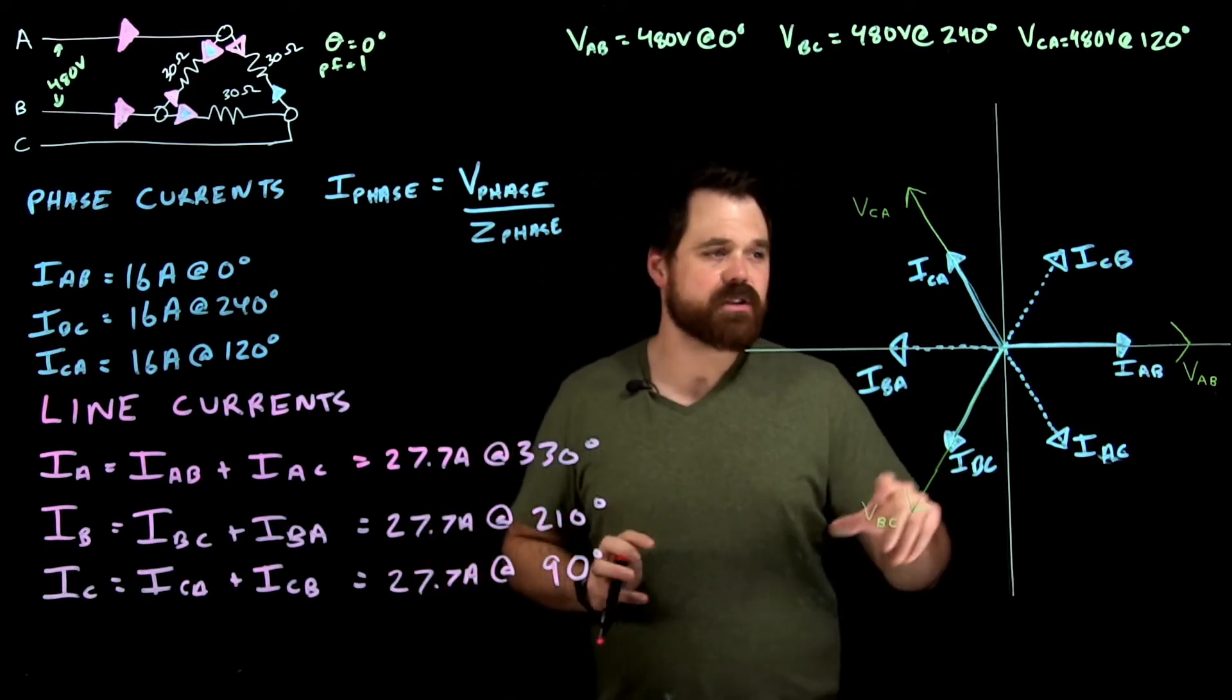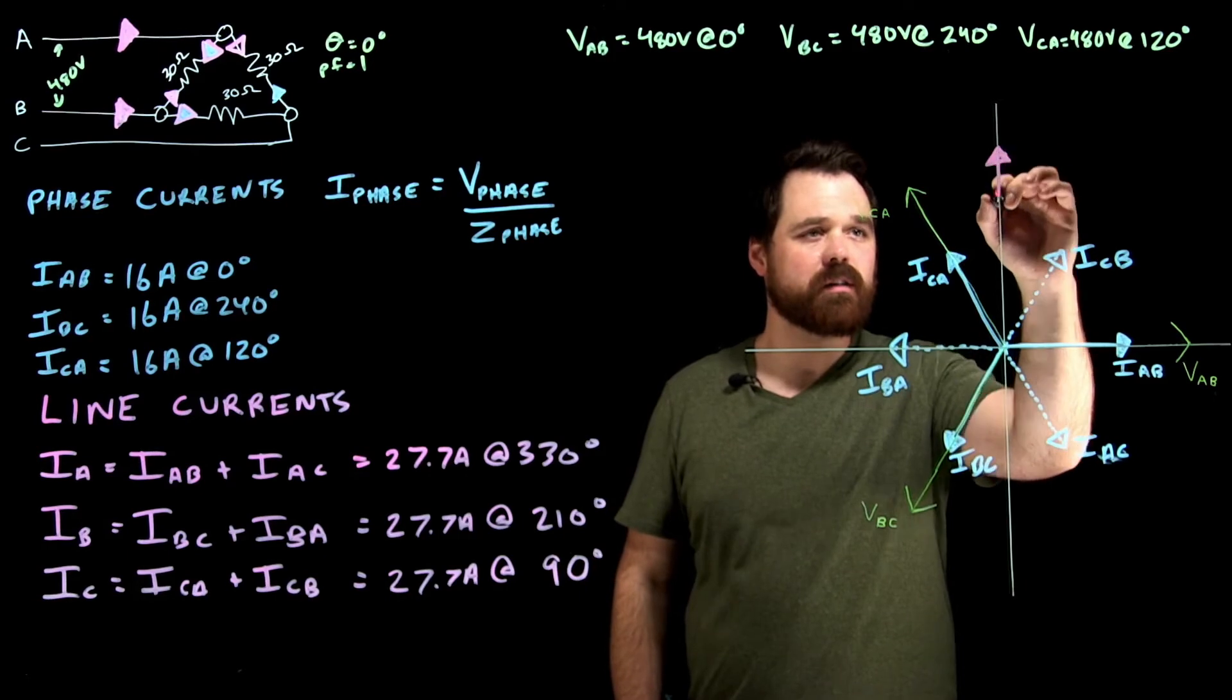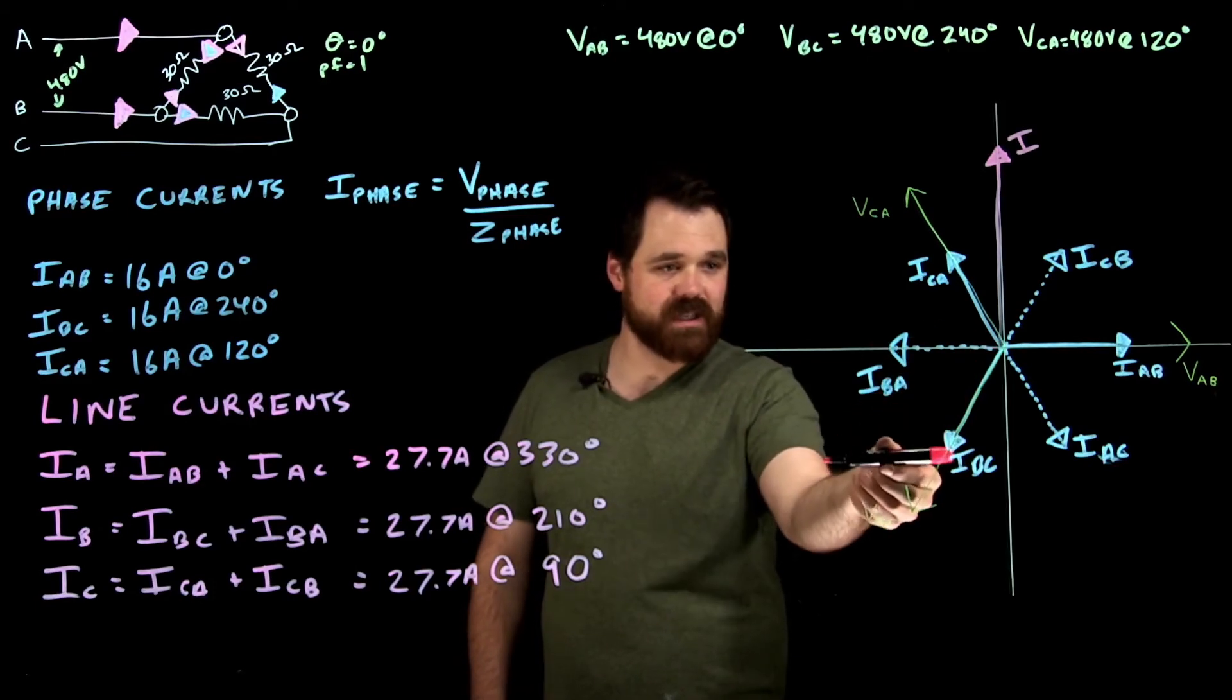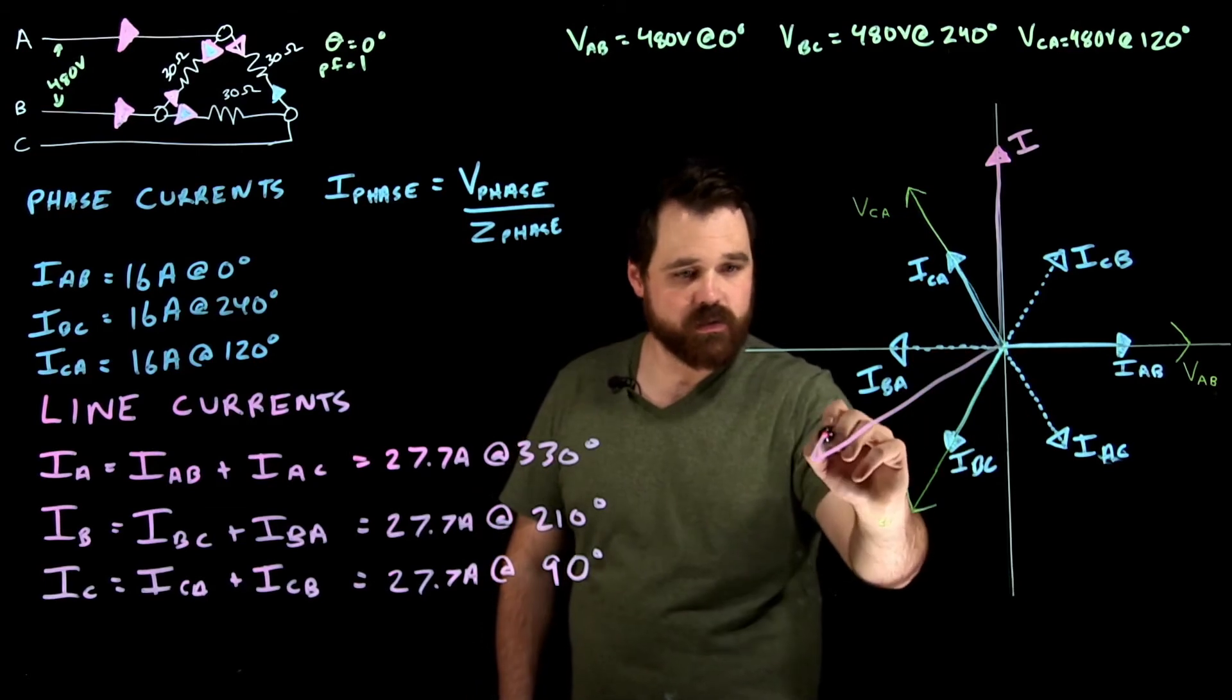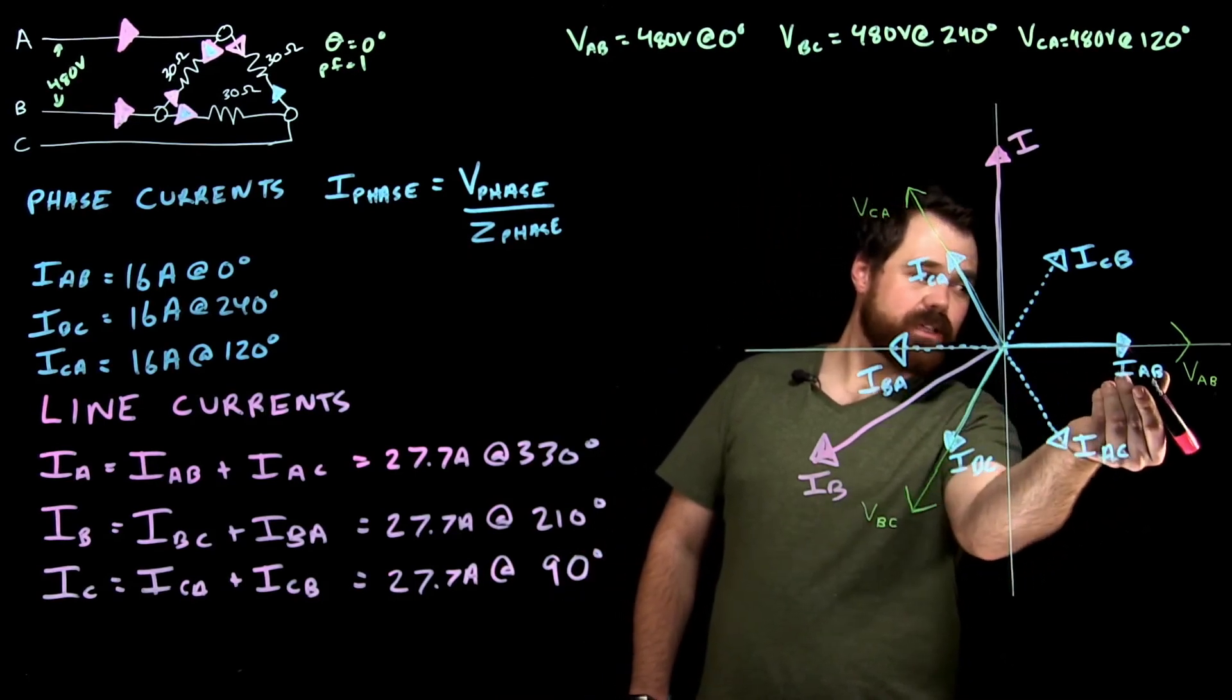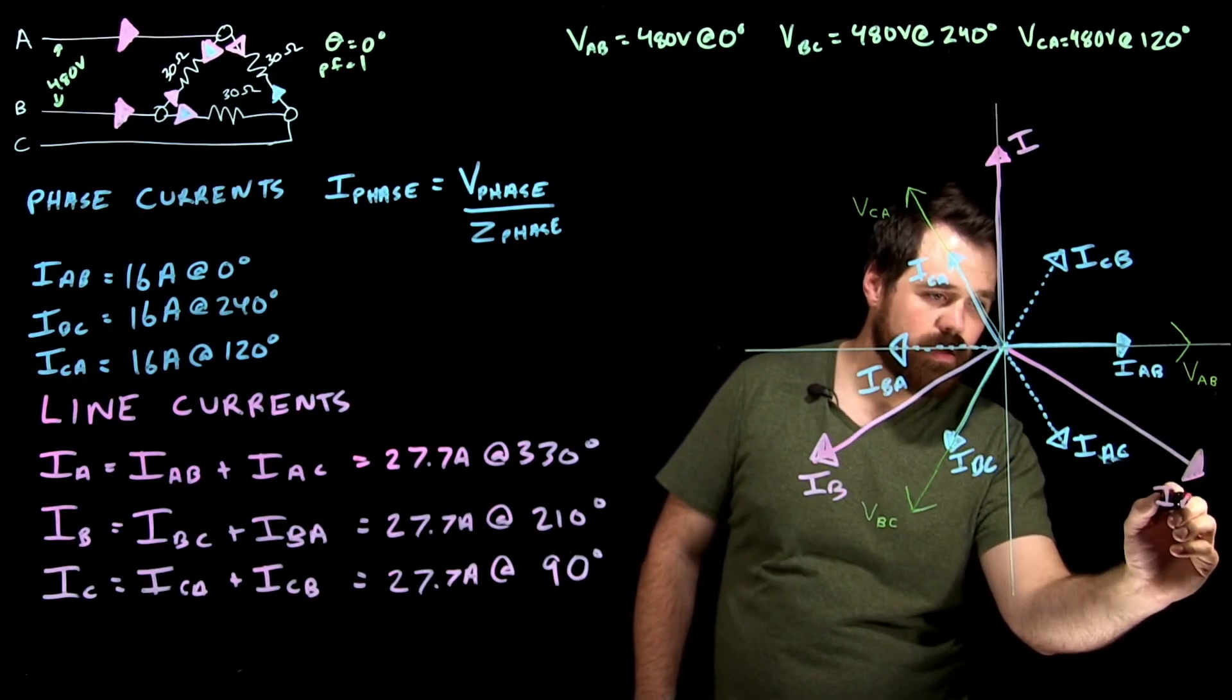Let's plot these real quick. So IC to A plus C to B gives me this up here, which is IC. IB to A plus IB to C gives me right here. This is IB. And then A to C plus A to B gives us IA.